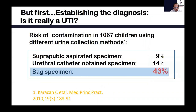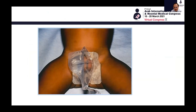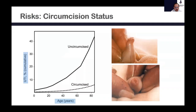It is very important to establish the diagnosis and ask ourselves: is it really a UTI? A study of more than 1,000 children using different urine collection methods warns us that utilizing a bag specimen harbors 43% contamination, as opposed to 9% for suprapubic aspiration and 14% for urethral catheter specimens. It is very important to disregard any result from a bag urine specimen. I disregard treating kids based on a bag specimen, though it remains a widespread practice among some clinicians.